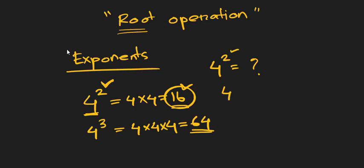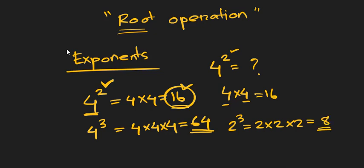We know from the exponent that we have to multiply 4 two times to get the result, which is 16. For 2 cubed, it means how many times you have to multiply 2 to get the result. We know 2 times 2 times 2 — we have to multiply 3 times and the result is 8.